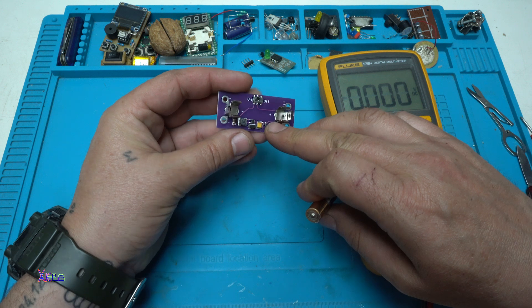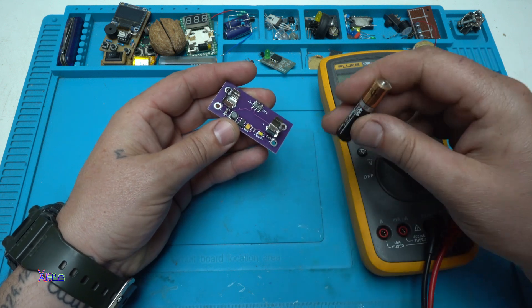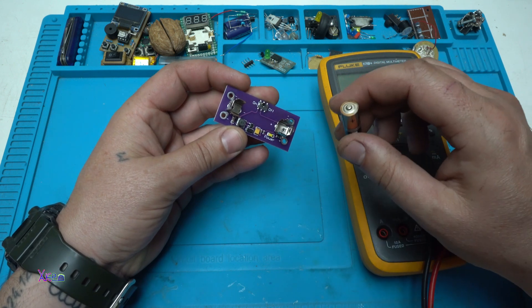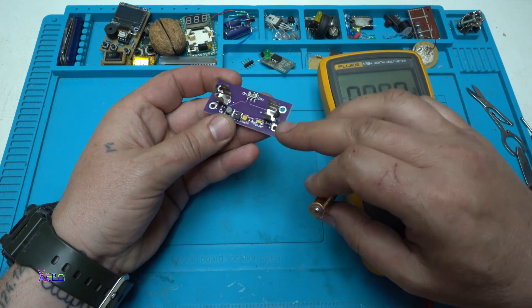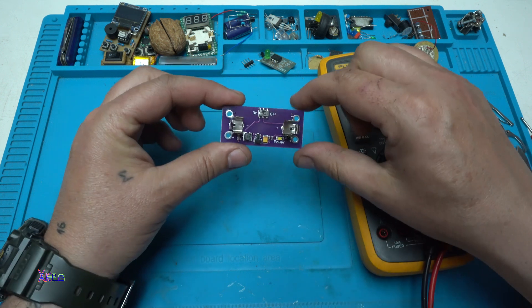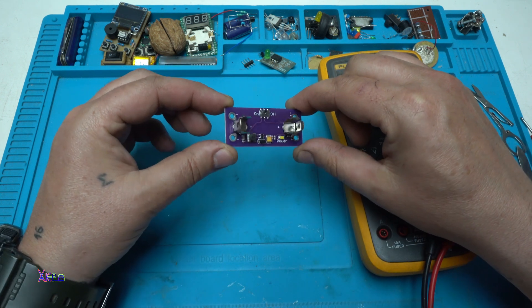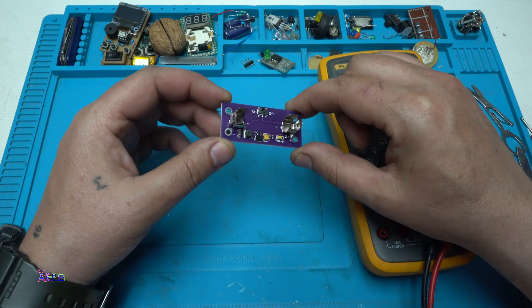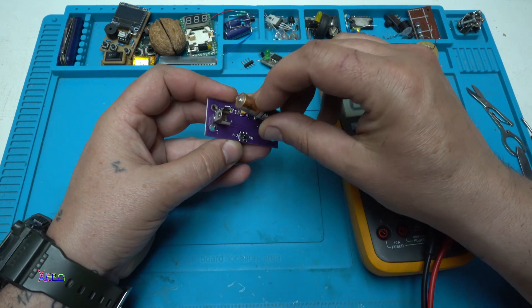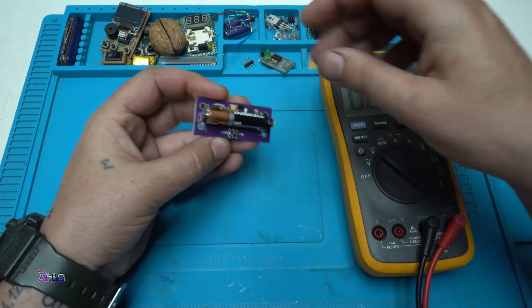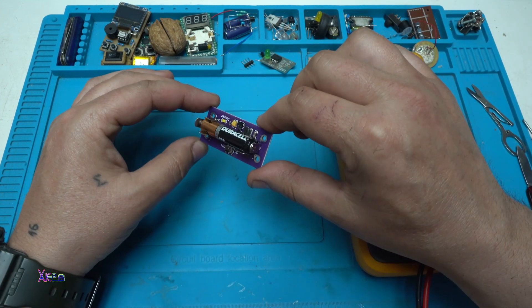And here I have the module that will convert from 1.5 volt to 5 volts and find out how many milliamps this board can deliver. It's a very great board with great color. Now I'm gonna insert the battery and already it looks awesome.